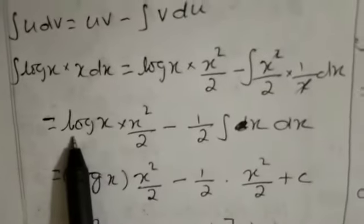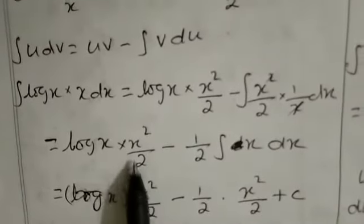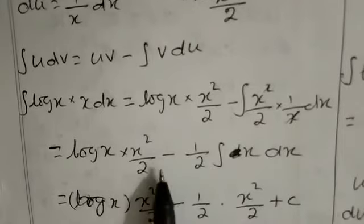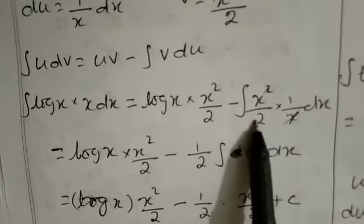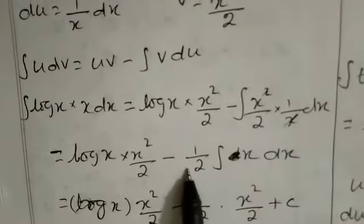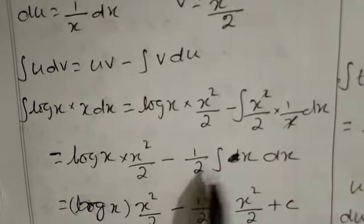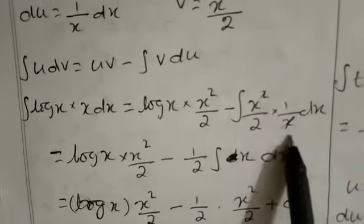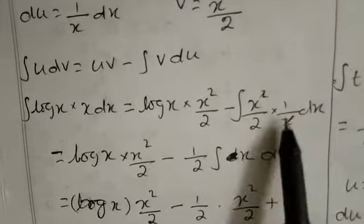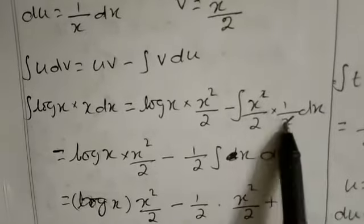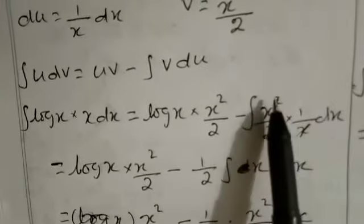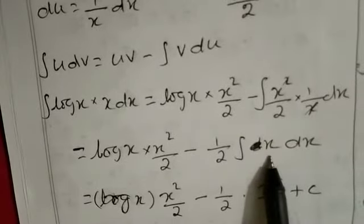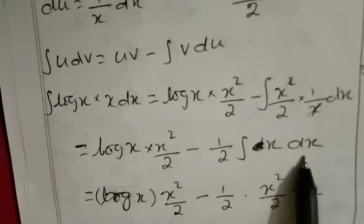The first term is log x into x squared divided by 2, written as it is. In the second part, minus, we take 1 by 2 outside. So we have 1 by 2 into integration of x squared divided by x — we can cancel these two terms, and only x remains, giving x into dx.